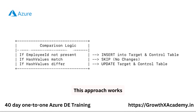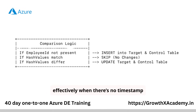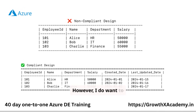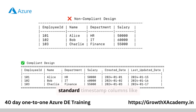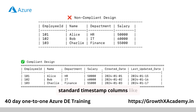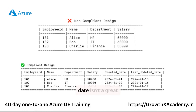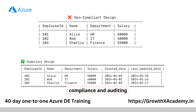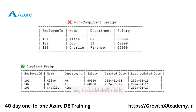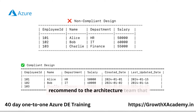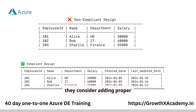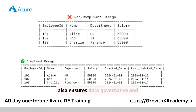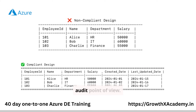This approach works effectively when there's no timestamp data available for incremental loads. However, I do want to point out that having a table without standard timestamp columns like created date or last updated date isn't a great database design from a compliance and auditing perspective. So I would definitely recommend to the architecture team that they consider adding proper timestamp columns — it not only simplifies incremental loads, but also ensures data governance and audit requirements are met.